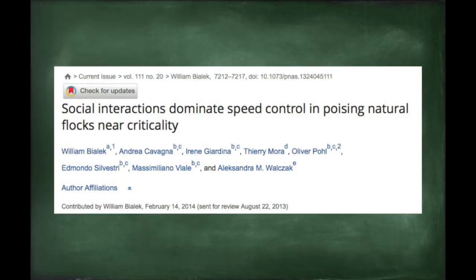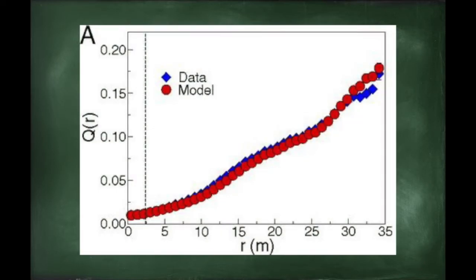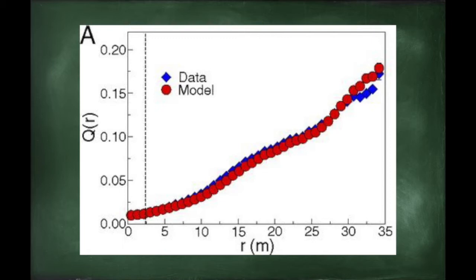The same group published a paper in 2014 that follows the same model, but looks at the distribution of velocities instead of directions. They found that the correlation of velocities was also scale-free, which means that is independent of the size of the flock.